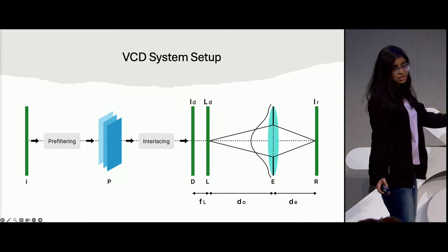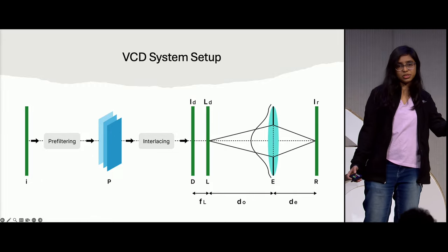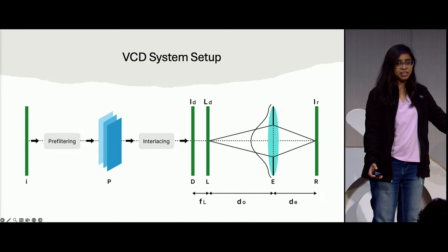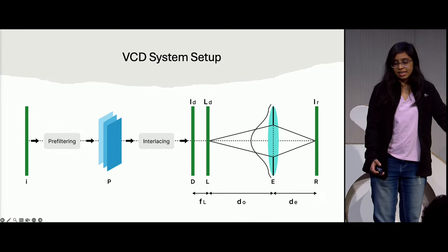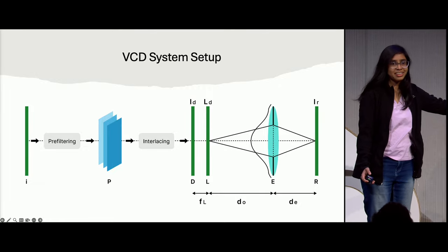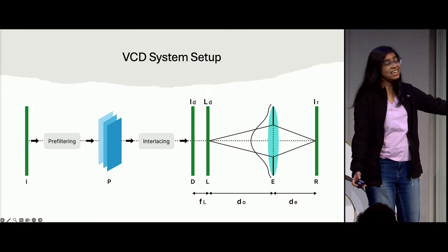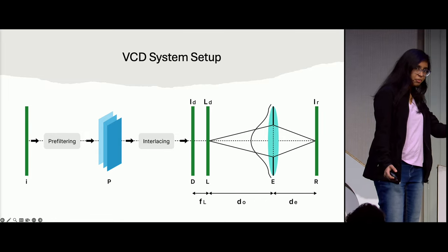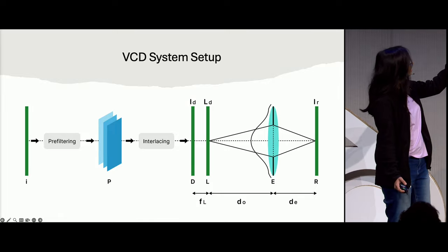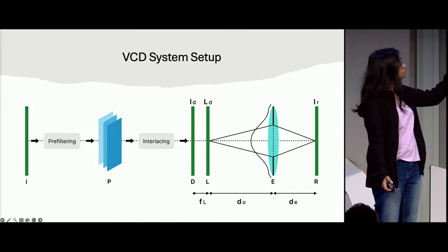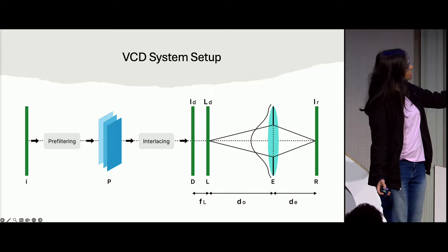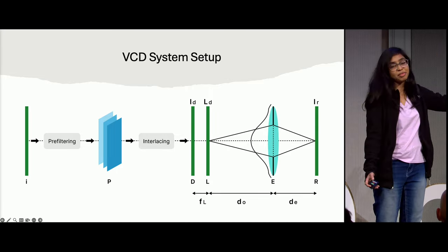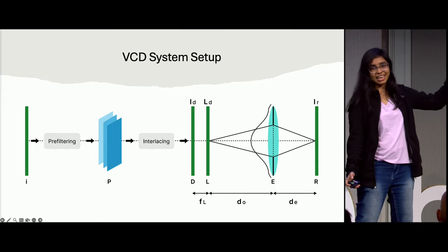The entire setup: take an image, do some pre-filtering, then do the interlacing work. We get a pre-filtered image which is displayed on the LCD display. Up to this part is software. The next part is hardware — the display, and on top of the display we place a lenslet array or a pinhole array. This is viewed by a person with a vision problem, who should clearly see a clear image on their retina.